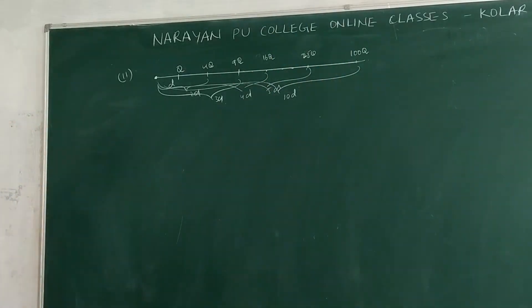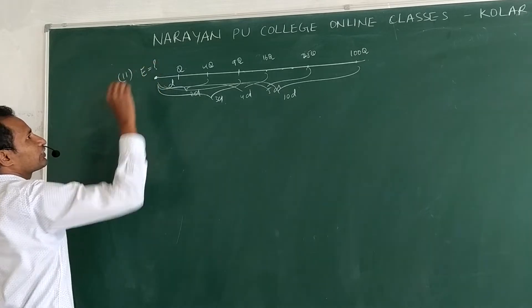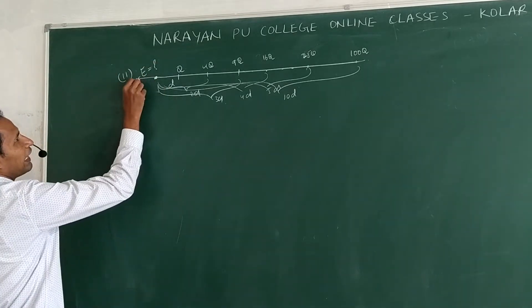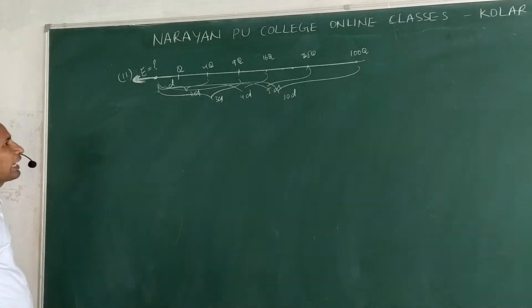That is the arrangement as given. Now they are asking net field at the origin. All possible factors, all fields add in this direction. So all are in the same direction, add all.